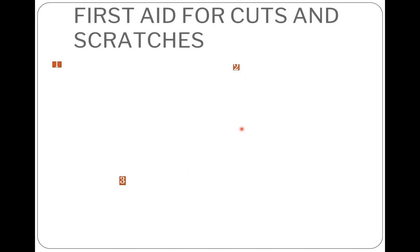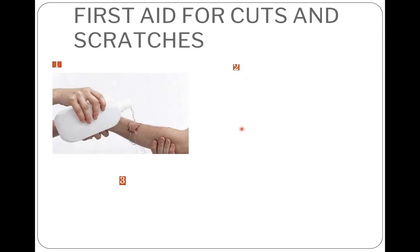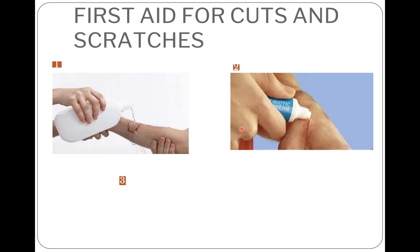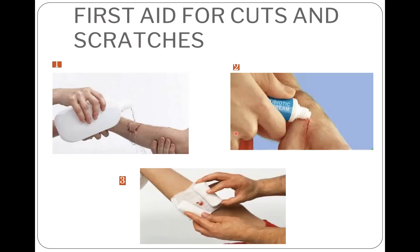What first aid should you give for cuts and scratches? Every one of you would have got some cuts and scratches when playing carelessly. The person giving first aid should wash their hands before helping the injured person — this gets rid of germs that can enter the body through cuts and wounds and cause infection. If the cut is small, wash it with soap and plenty of water or a clean cloth. Then dry the wound, apply antiseptic cream, and cover the wound with a clean plaster or bandage.